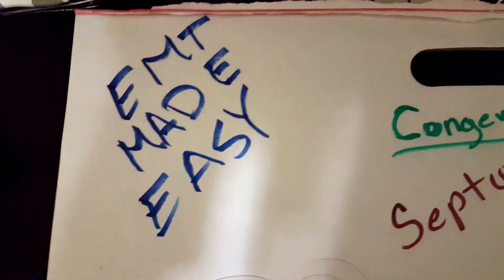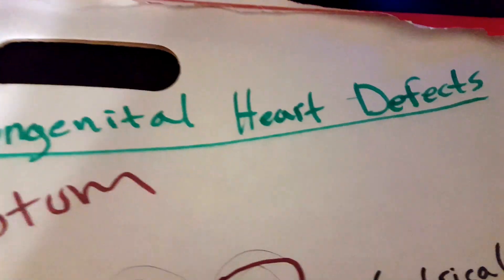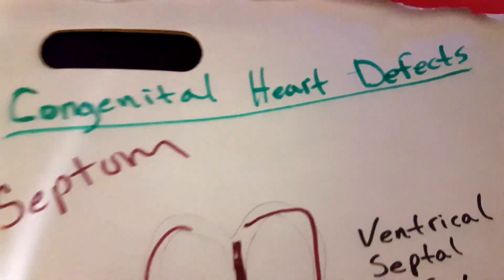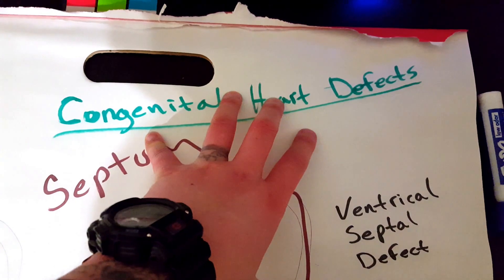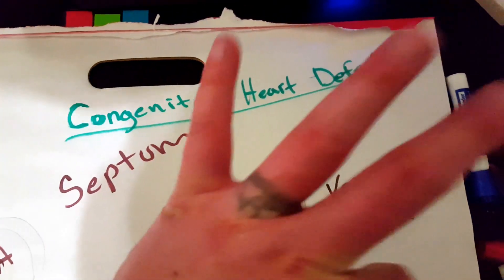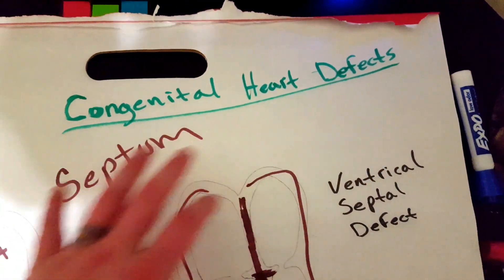We're going to cover congenital heart defects briefly. Now, there are different types of congenital heart defects. I'm only going to discuss three. So, three different kinds.